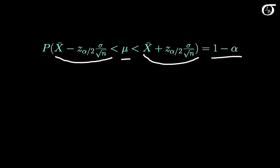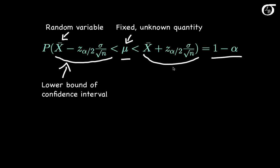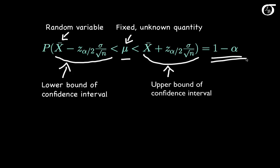An important point: x bar is the random variable, while mu is a fixed unknown quantity that we are trying to estimate. Any variability is due to the fact that the sample mean is a random variable. When we do get our sample, the sample mean takes on a value, giving us a lower bound and an upper bound of the confidence interval, with a confidence level of 1 minus alpha, which we often express as a percentage.